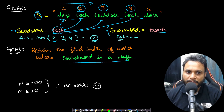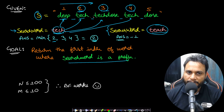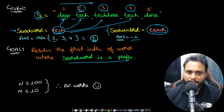If you look at the next search word, which is 'teach' — if you match it with all of these words from 1 to 5, none of these words will contain 'teach' as a prefix. So the search word is not present as a prefix of any word in the given sentence, and that is why we need to return minus one.